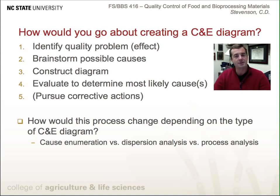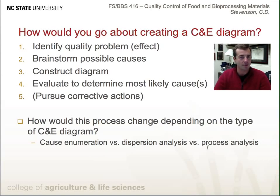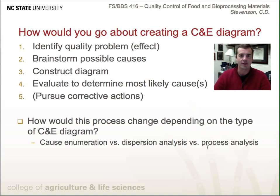How would this process change depending on the type of cause and effect diagram? A process analysis cause and effect diagram would probably be much easier because it's just a matter of identifying the steps involved in the process. Going back to the beer brewing example, you start with the first step — mixing the ingredients — distinguish major and minor causes involved in mixing, and then do so on with the next steps in that process.